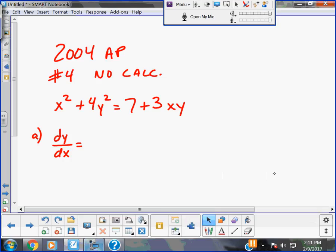Alright, so we want to run this AP problem. We want to get used to seeing this. This is really common in the no-calculator section. They actually gave the answer on the sheet, which you can look up on the internet, that it's 3y minus 2x over 8y minus 3x.